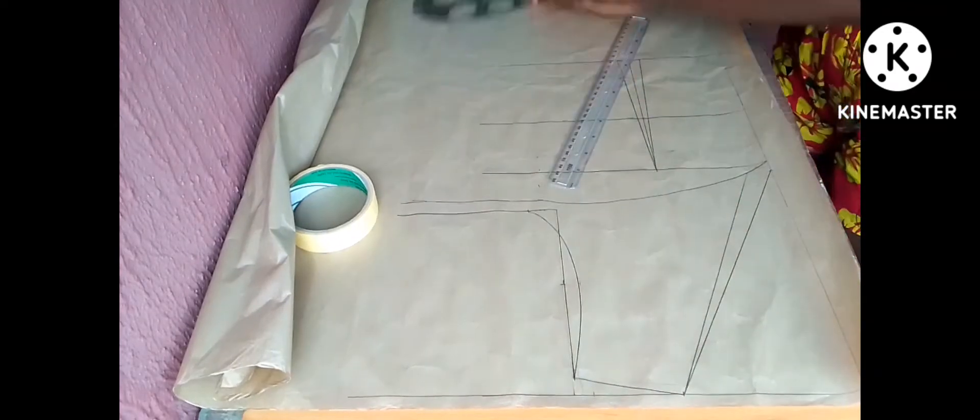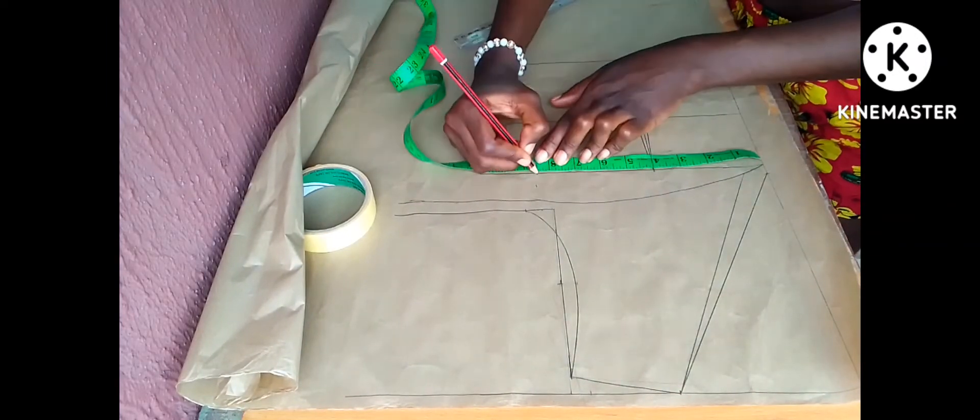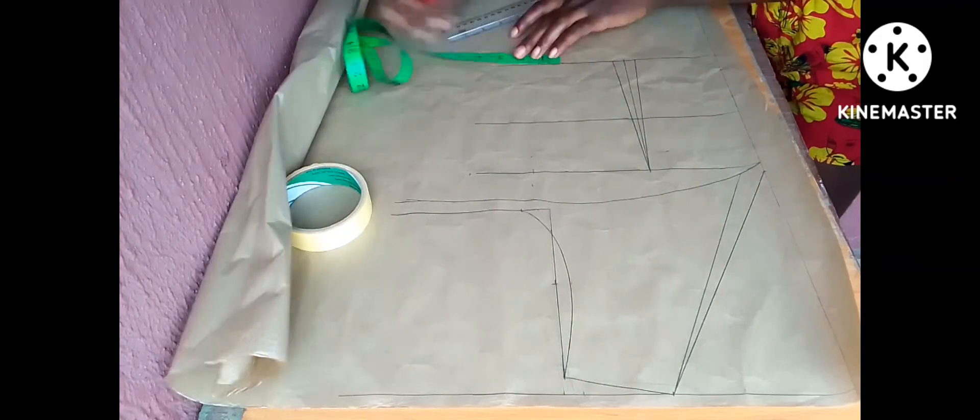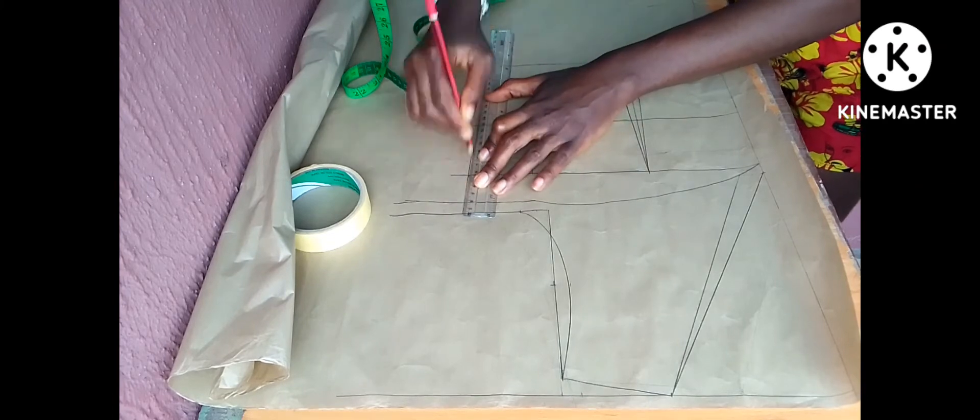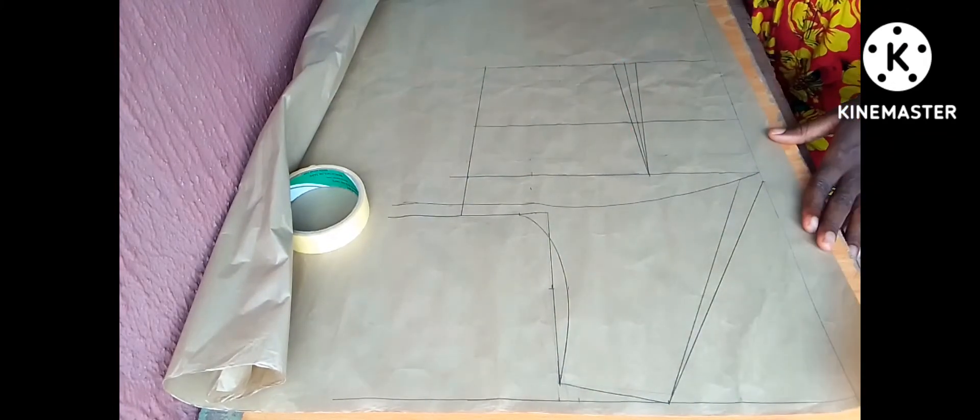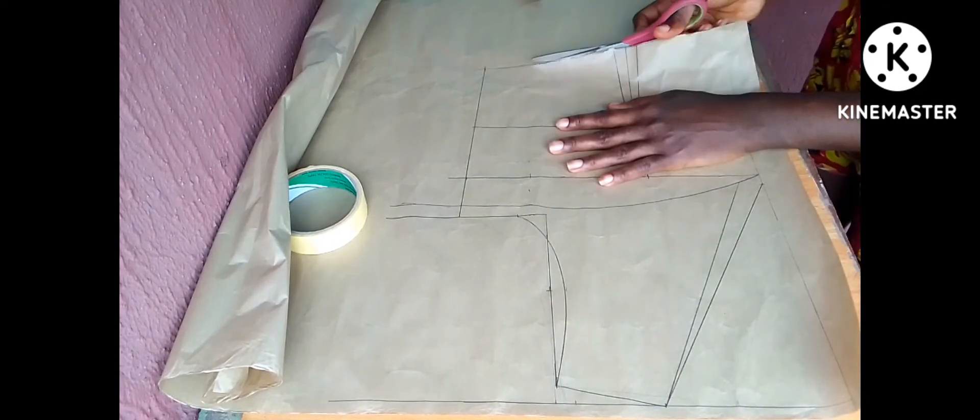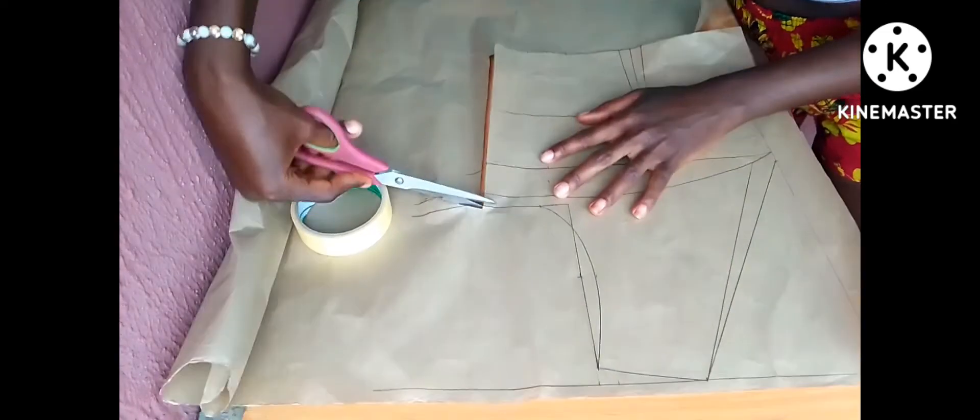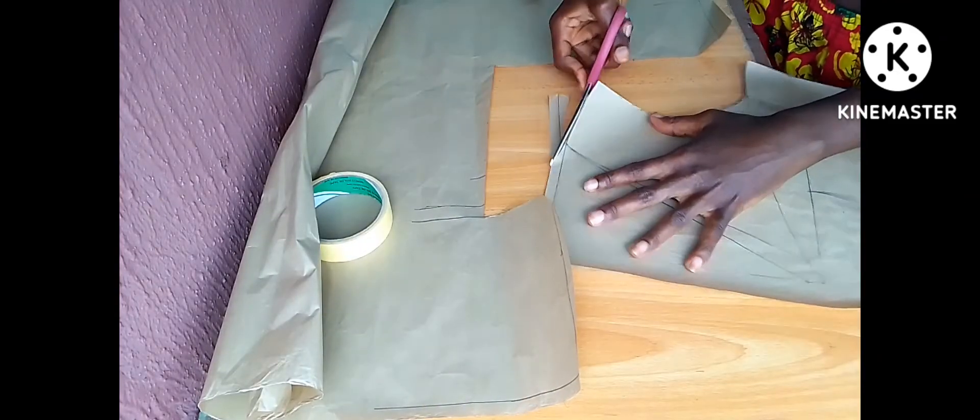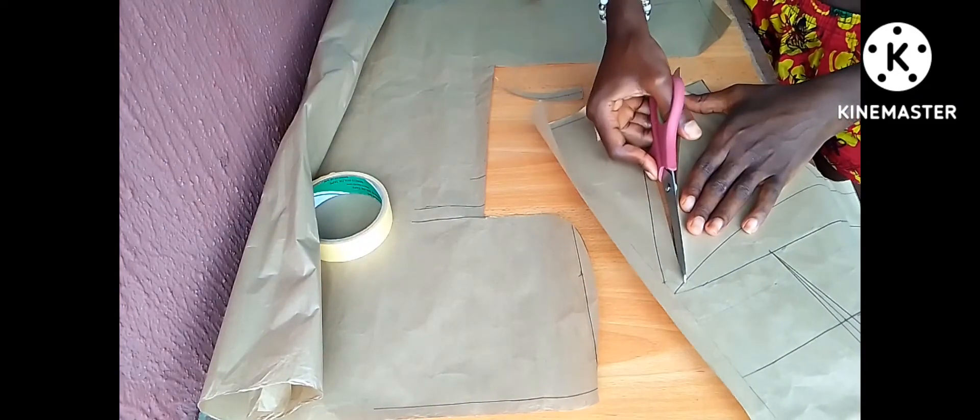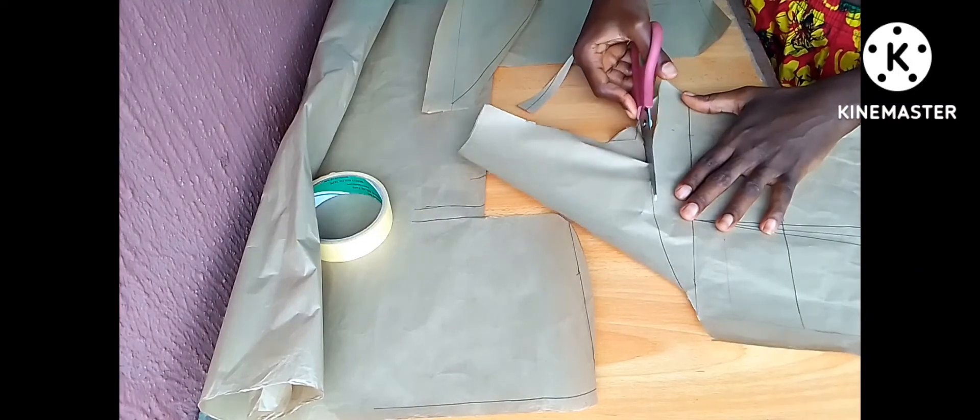So I'll just go ahead and insert my horizontal measurements. That's the bust circumference and the waist circumference. Join it with a ruler and cut out my back pattern.